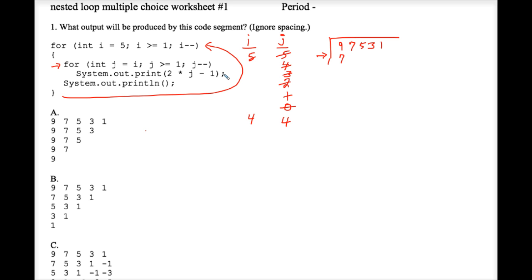We left off right here. We loop back up to the top of the inner for loop where j minus minus is three. Three is greater than or equal to one, two times three is six minus one is five, so five prints. We loop back up, we print three, we loop back up, we print one.